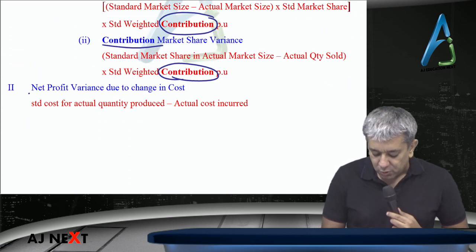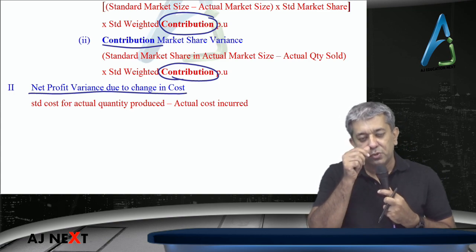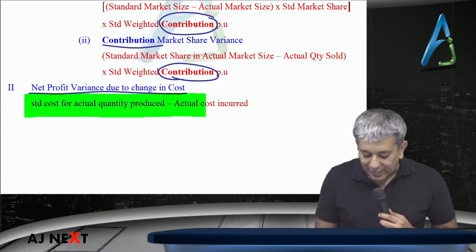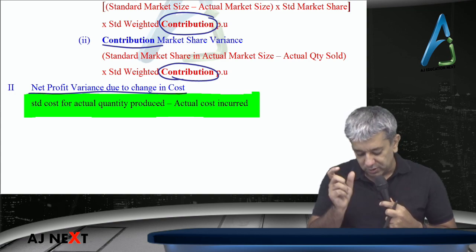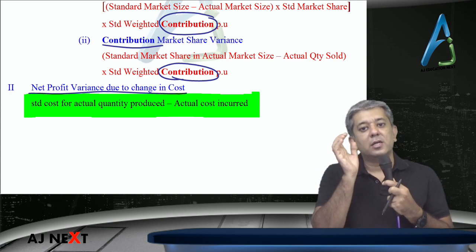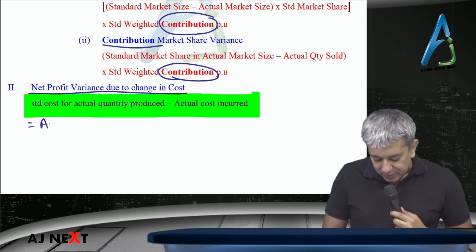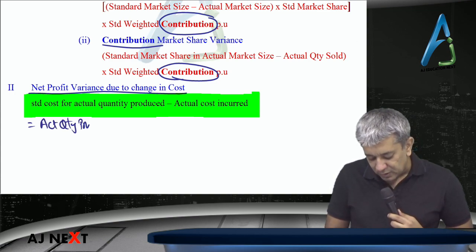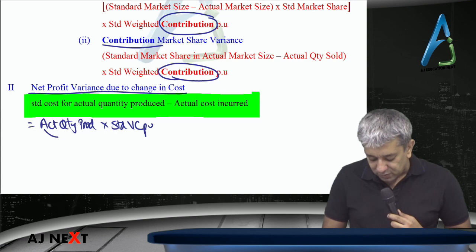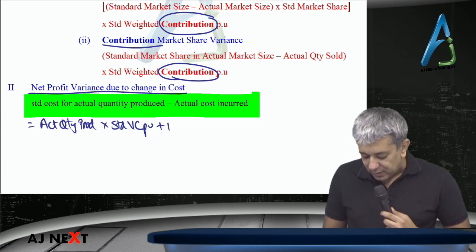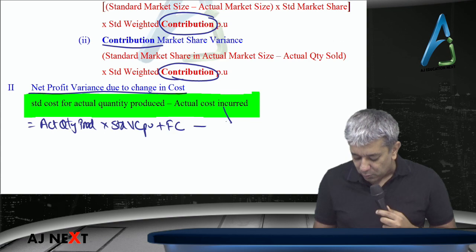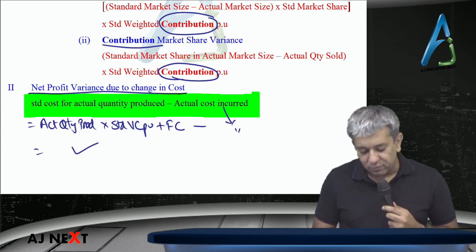Once this work is done — number two: net profit variance due to change in cost. Now calculation is done in totality because fixed overheads are not per unit. So, standard cost for actual quantity produced — for however many units were produced, what should the total expense have been? Multiply actual quantity produced by standard variable cost to get standard variable cost for actual output. Obviously you also need to add fixed cost, but add it as a lump sum. Minus actual expenses incurred — this gives you this particular answer.